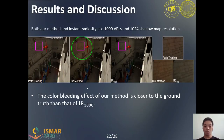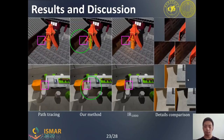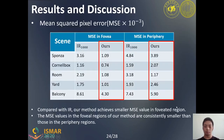We compare our result with path tracing and Instant Radiosity results. The color bleeding effect of our method is closer to path tracing than that of Instant Radiosity. In the yard scene, Instant Radiosity shows brighter orange on the barrier than path tracing and our result. In the balcony scene, Instant Radiosity missed the orange color bleeding on the ground. Compared with Instant Radiosity, our method achieves smaller MSE values in the foveal region, and the MSE values in the foveal region of our method are consistently smaller than those in the peripheral regions.